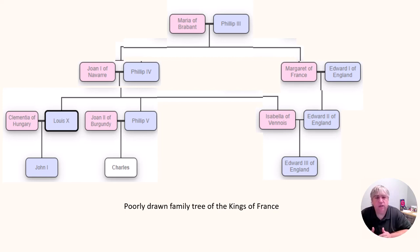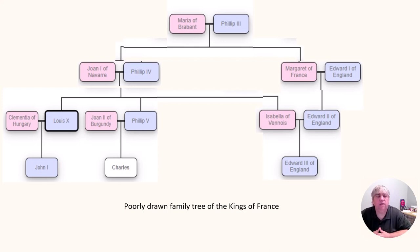Philip IV had a child, so according to the rules his oldest son Louis X will become king when Philip IV dies — and that's what happens. Louis X has a son, so it goes to the firstborn son on that line, John I. John I did not have any kids. Therefore you have to find the next closest male relative, which if you go up the chart, Philip V was the uncle of John I. So Philip V becomes king after John I dies.